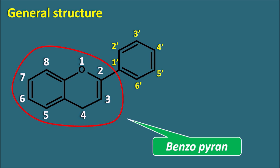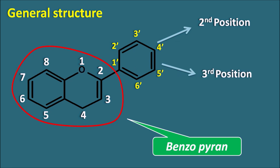One important modification is the change in location of the phenyl ring. Normally the phenyl ring is attached at the second position. But it can also be present at the third position, and these are called isoflavonoids, as they are isomers of the regular flavonoids. In all other flavonoids except isoflavonoids, the phenyl ring is present at the second position.